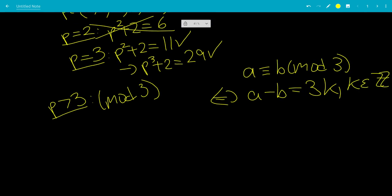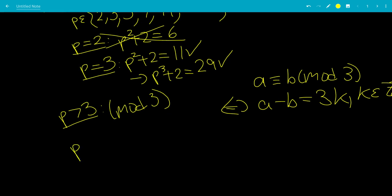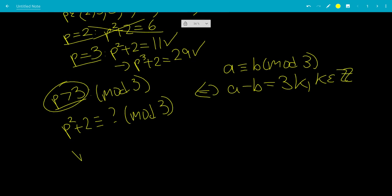So what we're going to do is we're going to say p is congruent to, question mark, mod 3 for p. Instead of p congruent to, we can just say p squared plus 2, it's congruent to what mod 3 for p greater than 3. So p equals 5, we'll have 5 squared plus 2 is 27, which is congruent to 0 mod 3.